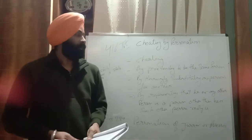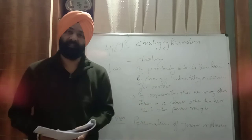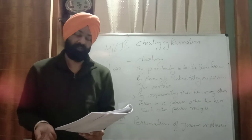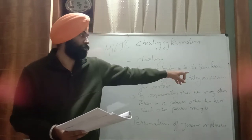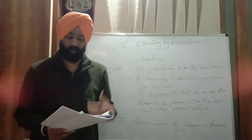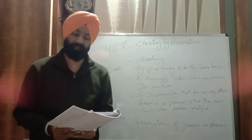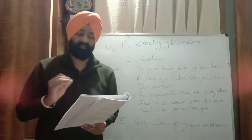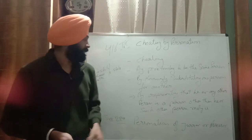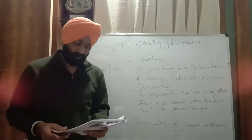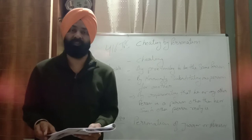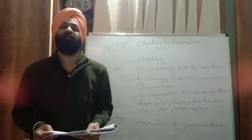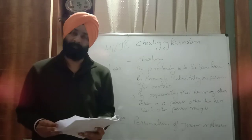As far as the statutory language is concerned, a person is said to cheat by personation if he cheats by pretending to be some other person, or by knowingly substituting one person for another, or by representing that he or any other person is a person other than he or such person really is. We will go through these ingredients one by one.